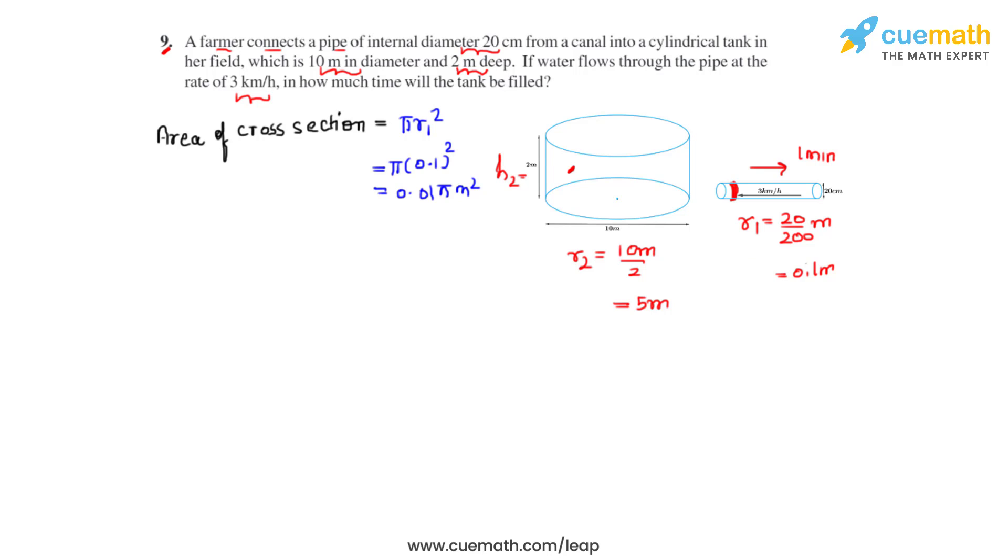Now what we have to find is the speed of water in meters per minute instead of kilometers per hour. The speed of water is 3 kilometers per hour. We can convert it into meters per minute by multiplying 1000 to the numerator and multiplying 60 to the denominator, and that gives the answer as 50 meters per minute.